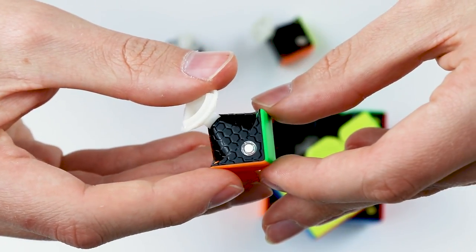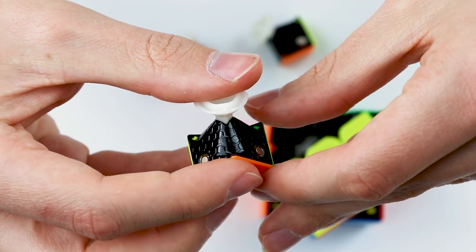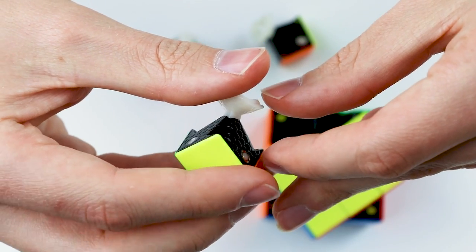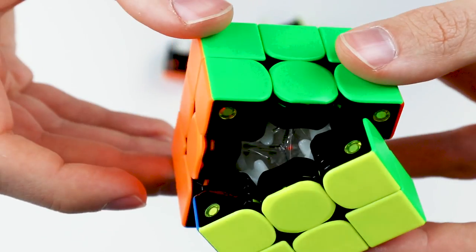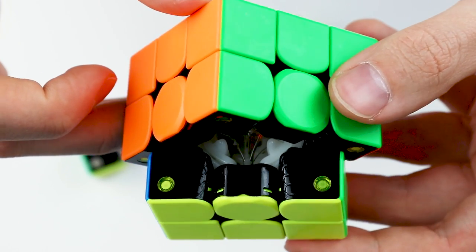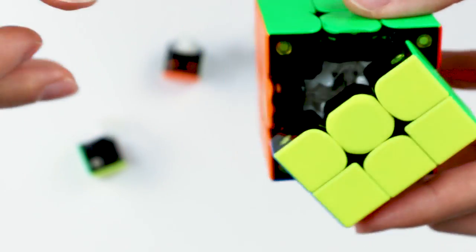Although from what I can see, if you happen to have GAN magnetic capsules for the X, I assume they would work with this cube, but obviously you'd have to either buy those secondhand or already have a 356X.